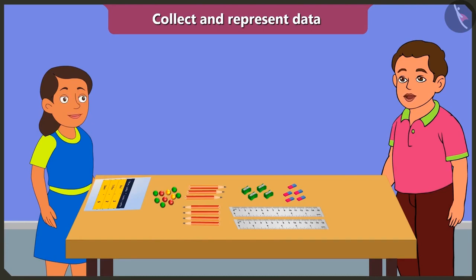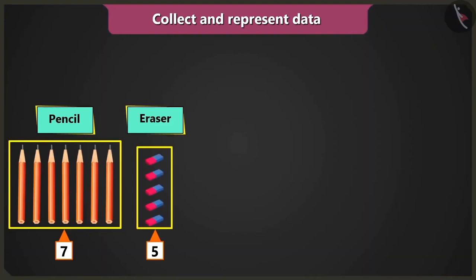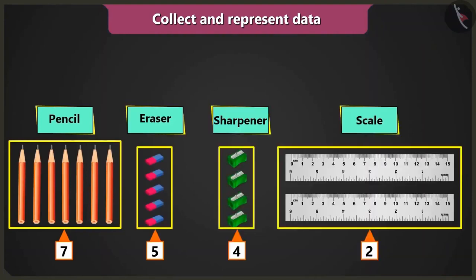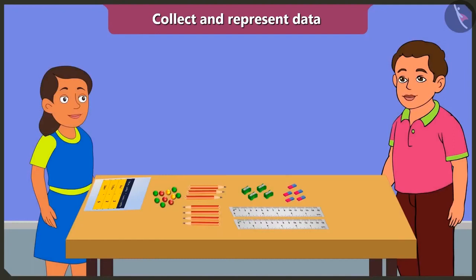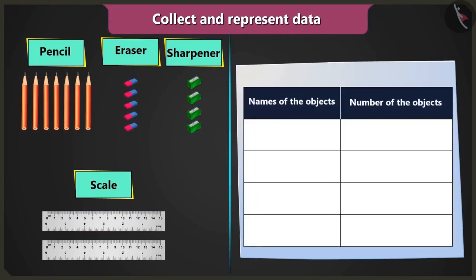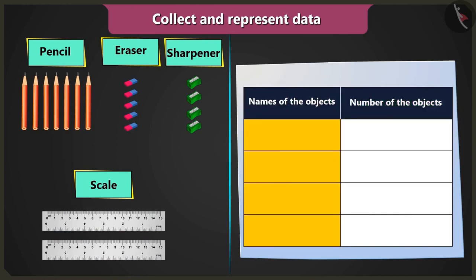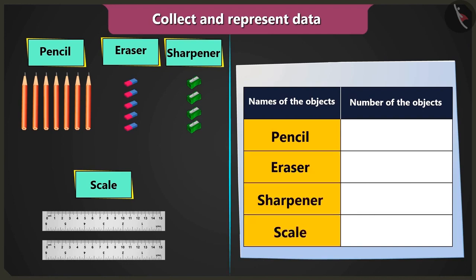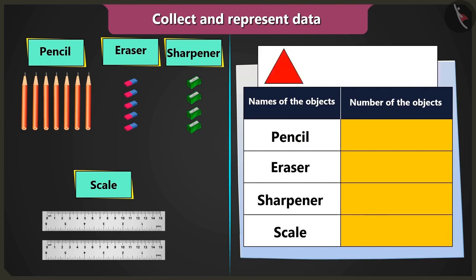First, you have to group the given objects whose data you wish to collect. I have seven pencils, five erasers, four sharpeners, and two scales. Now you have to create a table. I wrote the names of the objects in the first column and count of objects in the second column. Now in the column count of objects, you have to draw as many triangles, squares, or circles as the number of objects.